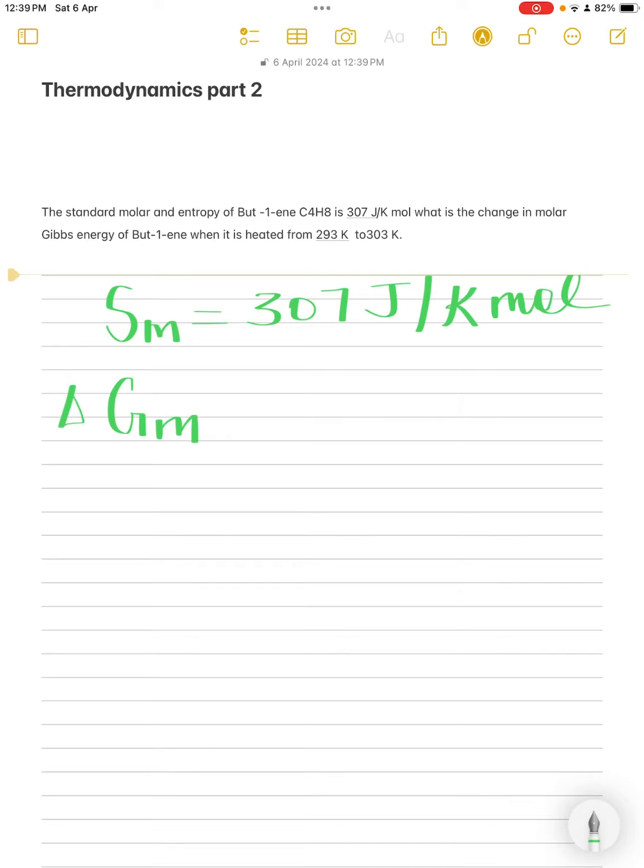Delta Gm we have to find out, and we have delta T also, which is 10 Kelvin.